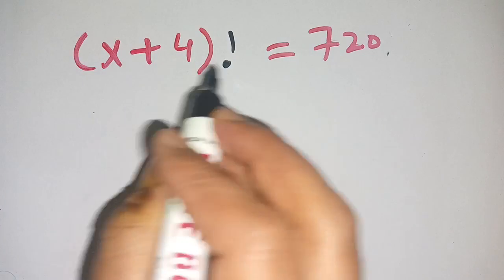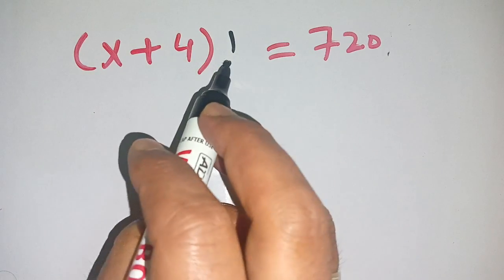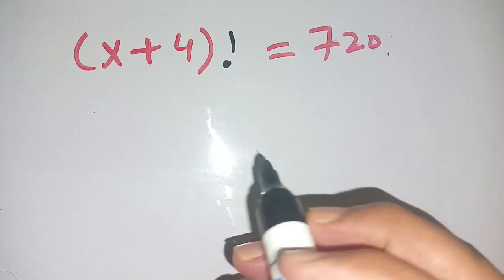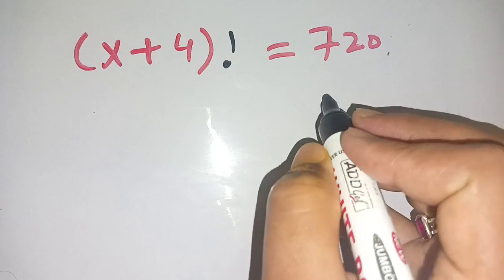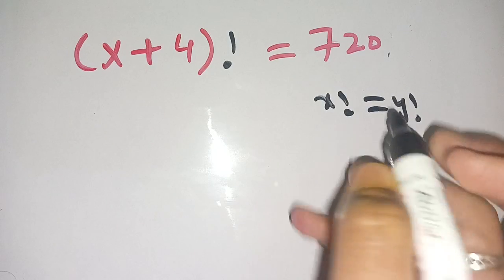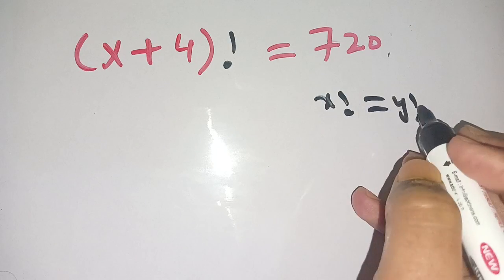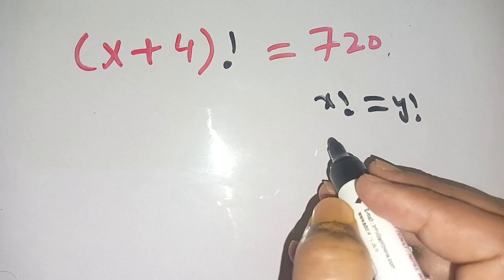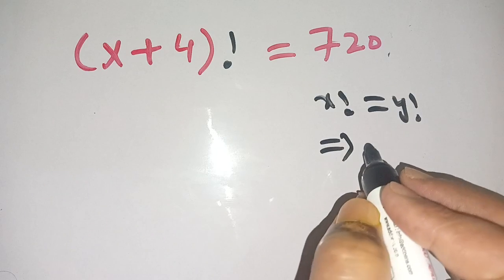In today's video, we are going to solve this factorial problem: (x+4)! = 720. Before solving this, we must know that if x factorial is equal to y factorial, then we can cancel out this factorial and this factorial from the left-hand side as well as from the right-hand side.